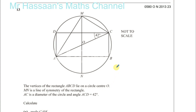Here we have question number 13 from November 2013 Paper 2/3. It's a question about angles in circles. We're told about the vertices of a rectangle ABCD, so all the properties of rectangles apply here — for example, the angles on the corners are 90°, the opposite sides are equal, the opposite sides are parallel, and so on.